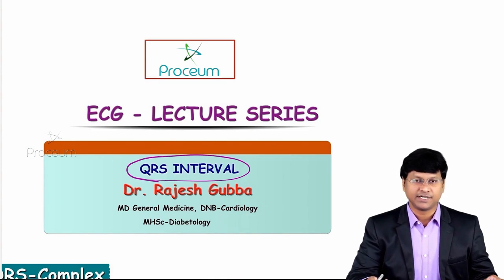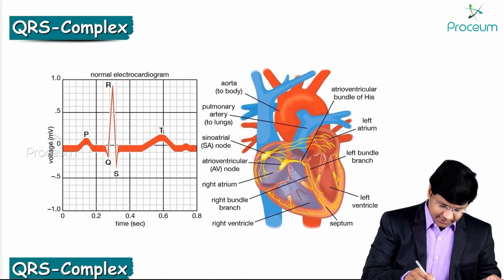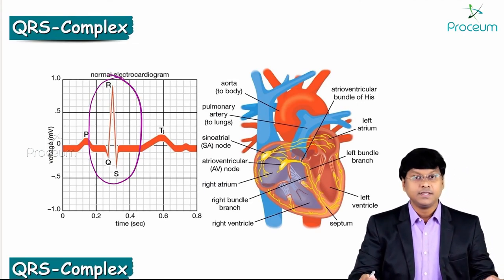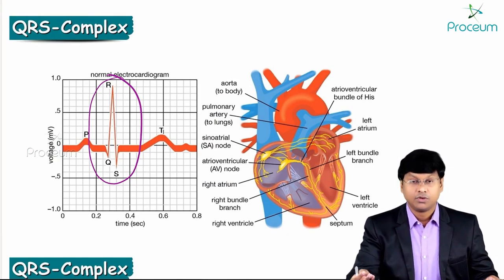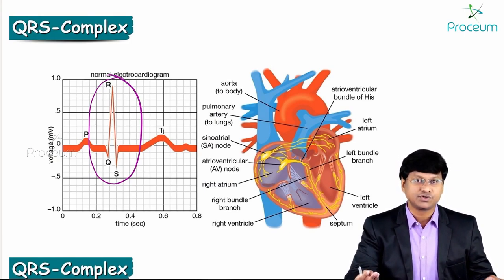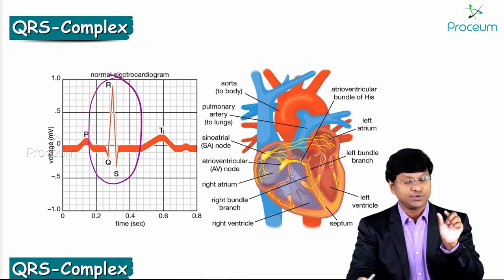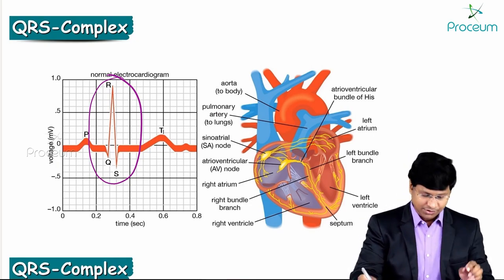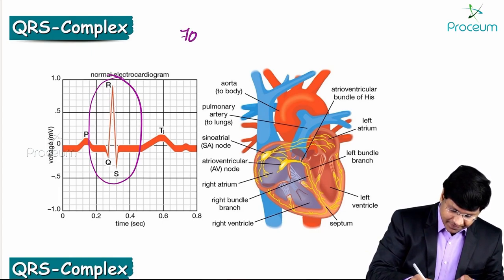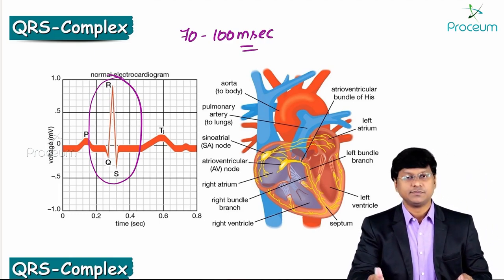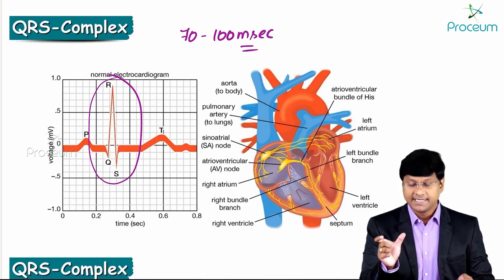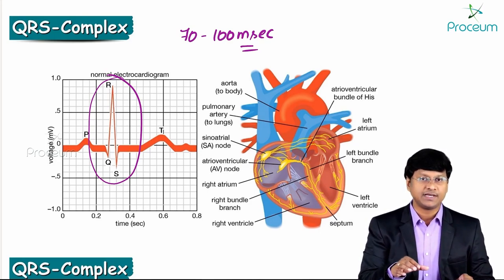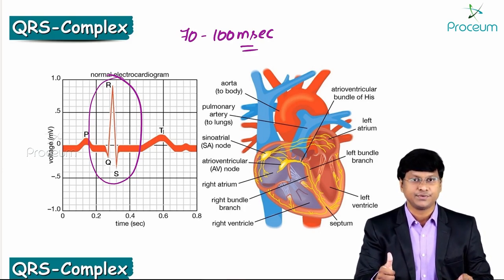What do we need to learn about the QRS complex? First, you need to understand the normal duration of the QRS complex, which is around 70 to 100 milliseconds. You also need to know what conditions cause changes in QRS duration — in certain conditions you will have a wide QRS complex and in others a narrow QRS complex.